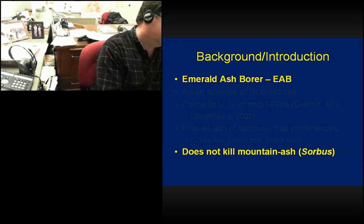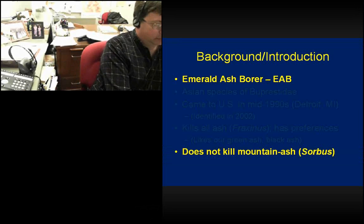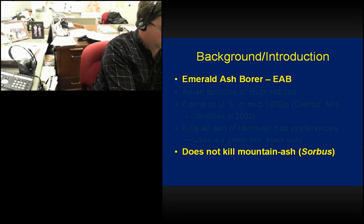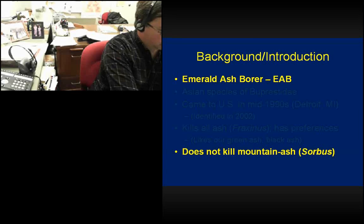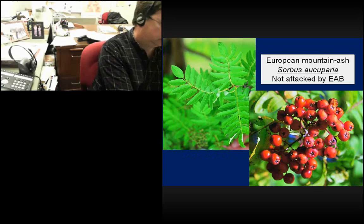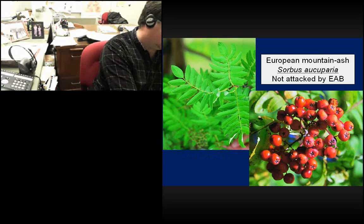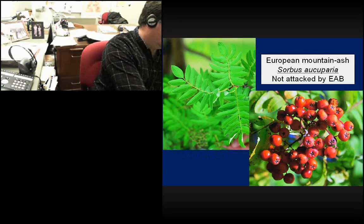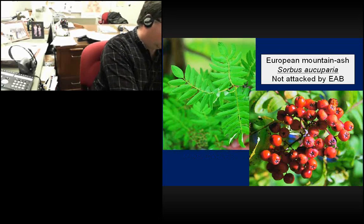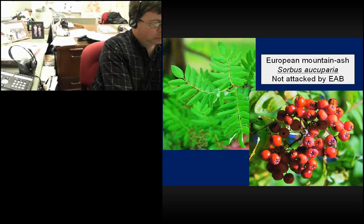EAB does not kill mountain ash trees. Mountain ash trees are in the genus Sorbus, which is in the rose family. The European mountain ash, showy mountain ash, oak-leaf mountain ash — all the mountain ashes — are not attacked by EAB and will be fine. That is it in terms of introduction and background.